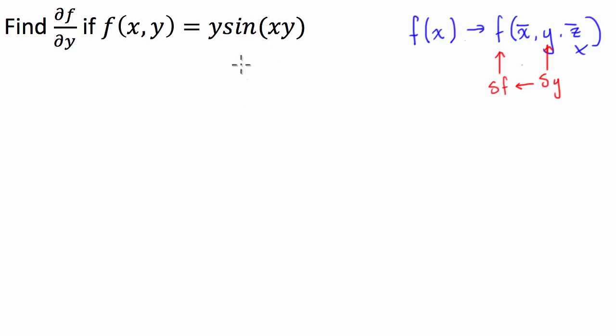Okay so what have we got here? We've got the function is y sine of xy. Now if we take this in terms of y we're going to have to use the product rule because we have two functions that are being multiplied. We've got a linear function here and we have a trigonometric function here.